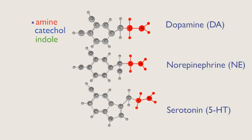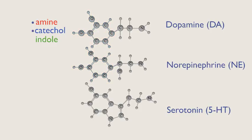Both dopamine and norepinephrine include one blue or catechol group. Dopamine and norepinephrine are known as catecholamines. Serotonin is an indole amine.